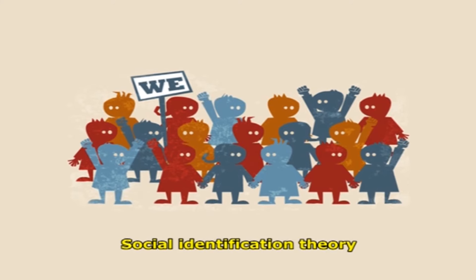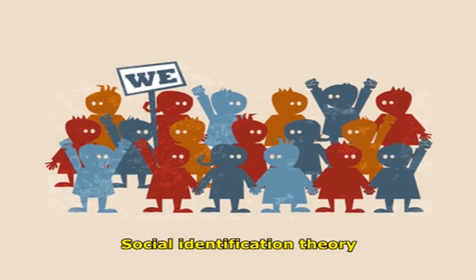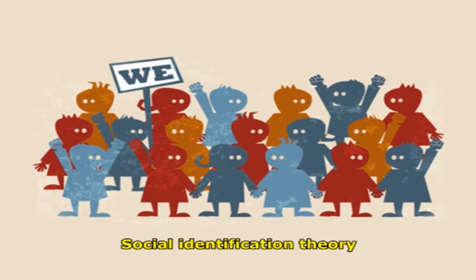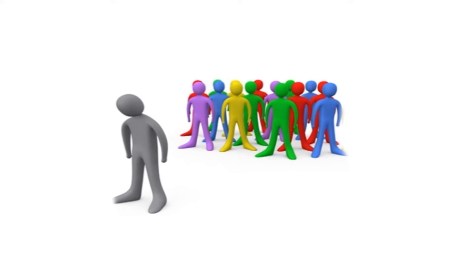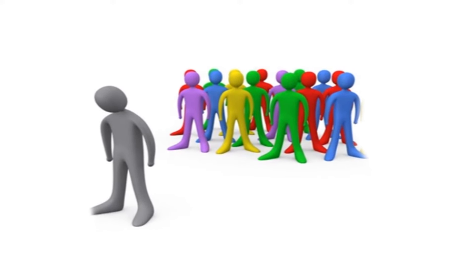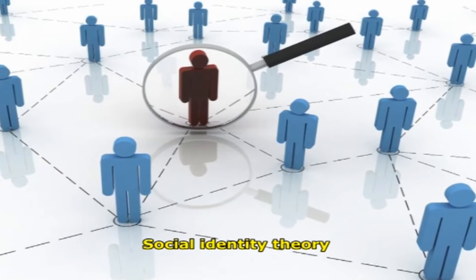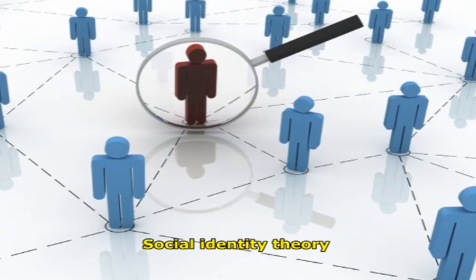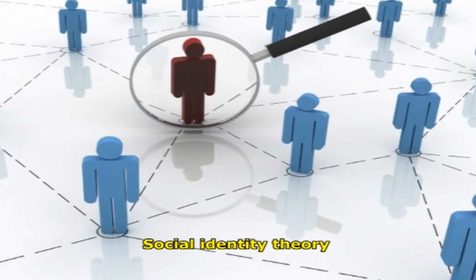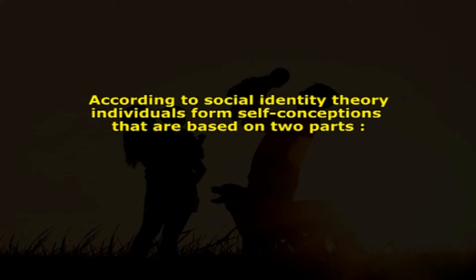According to social identity theory, social identity is a person's knowledge that he or she belongs to a social category or group. A child makes friends or becomes a member of a social group when he feels that all members of that group are similar to him. Children divide their friends into in-groups — people very similar to themselves — and out-groups, who are different from themselves. Social identity theory states that the in-group will discriminate against the out-group to enhance their self-image.